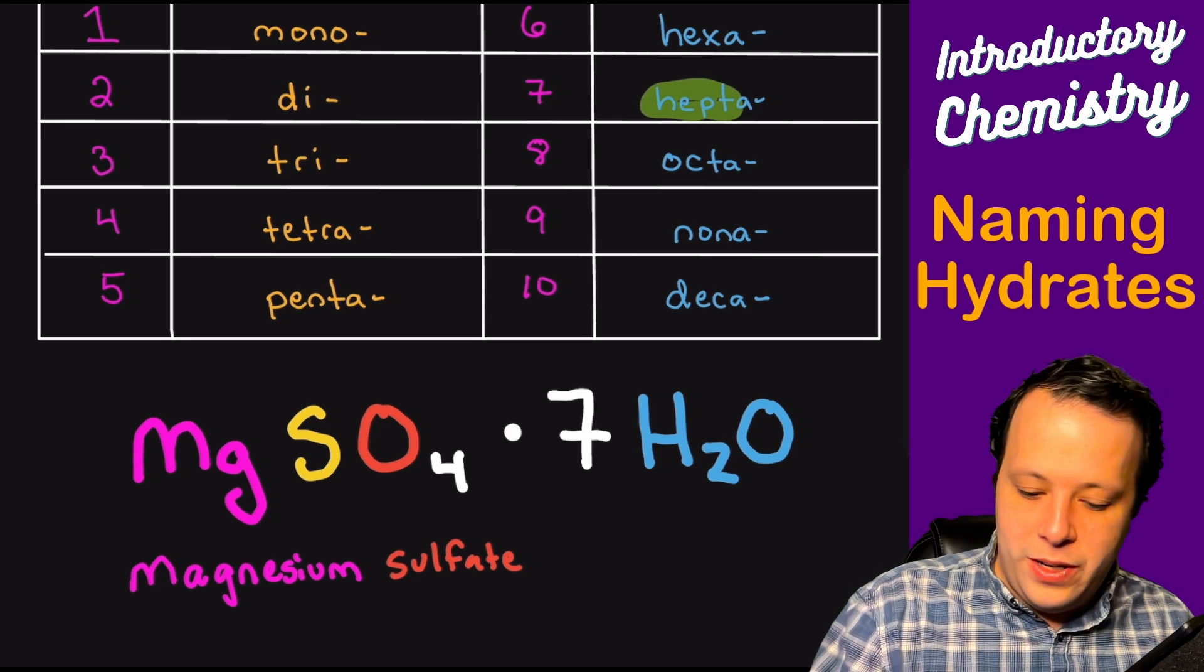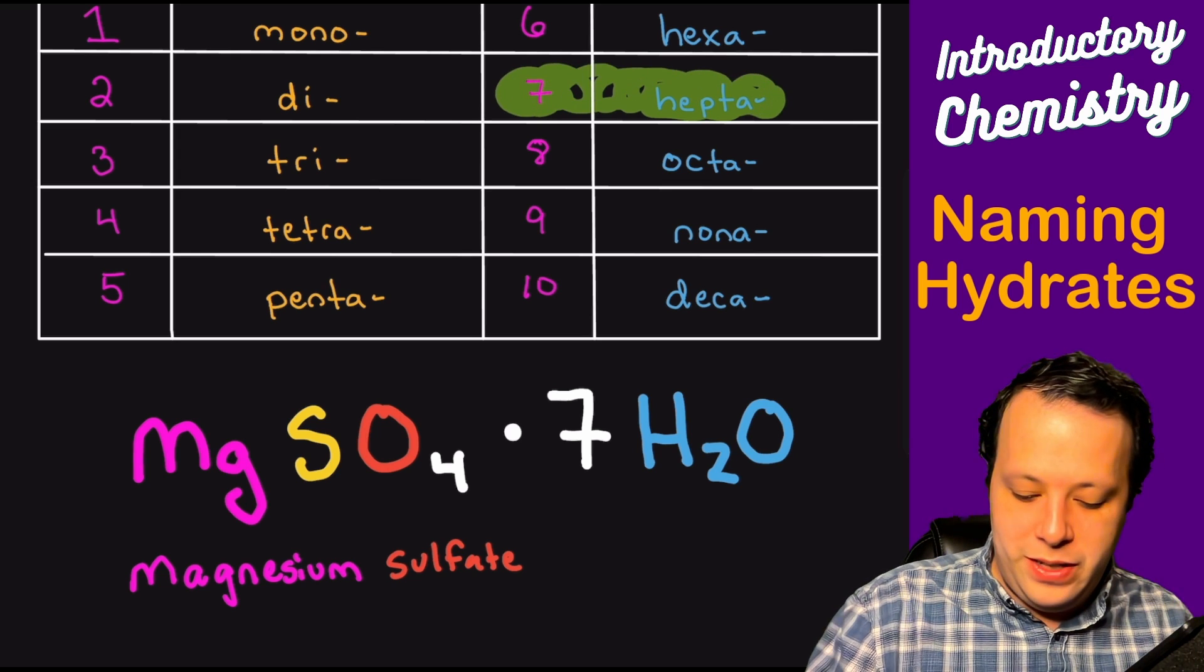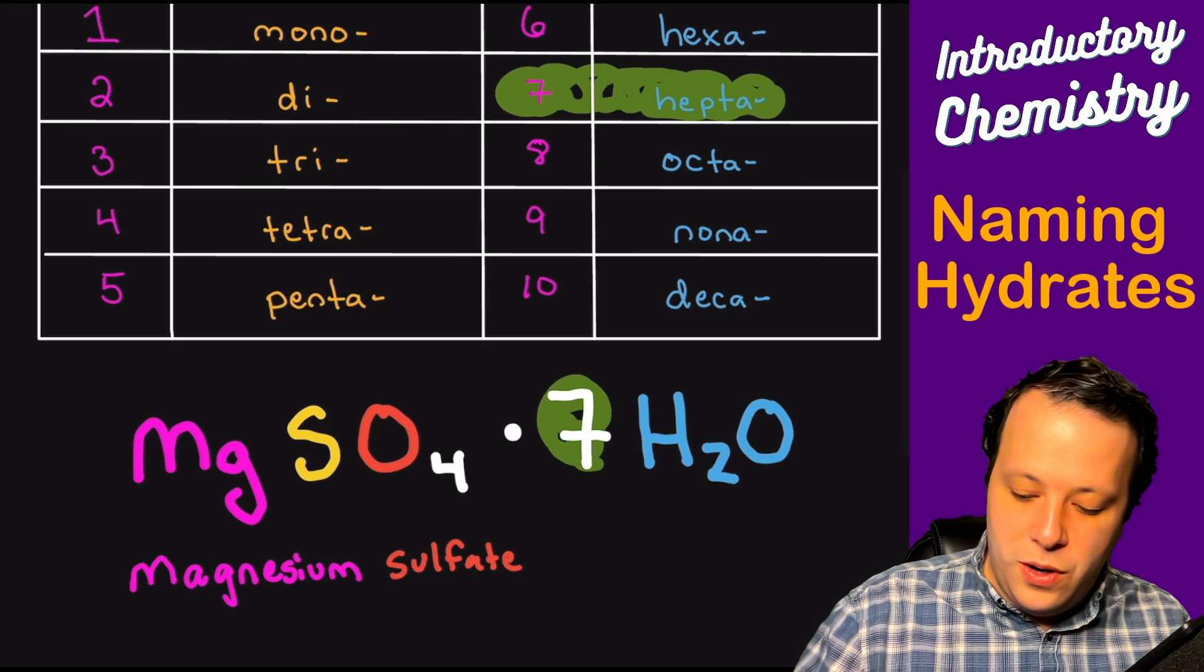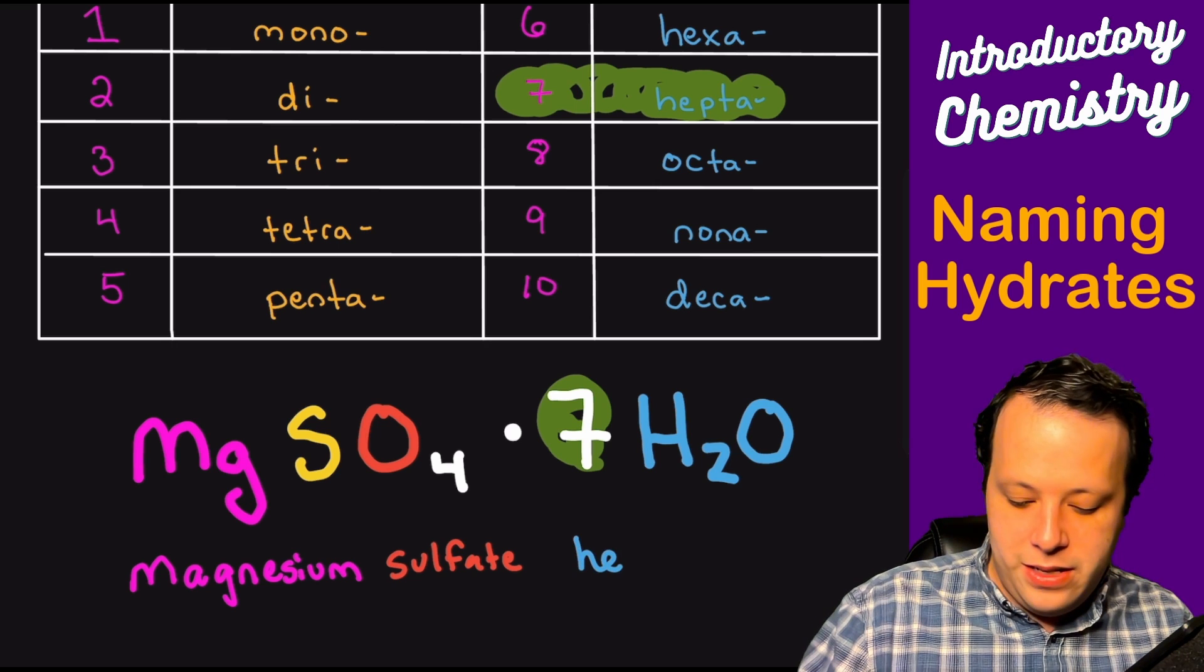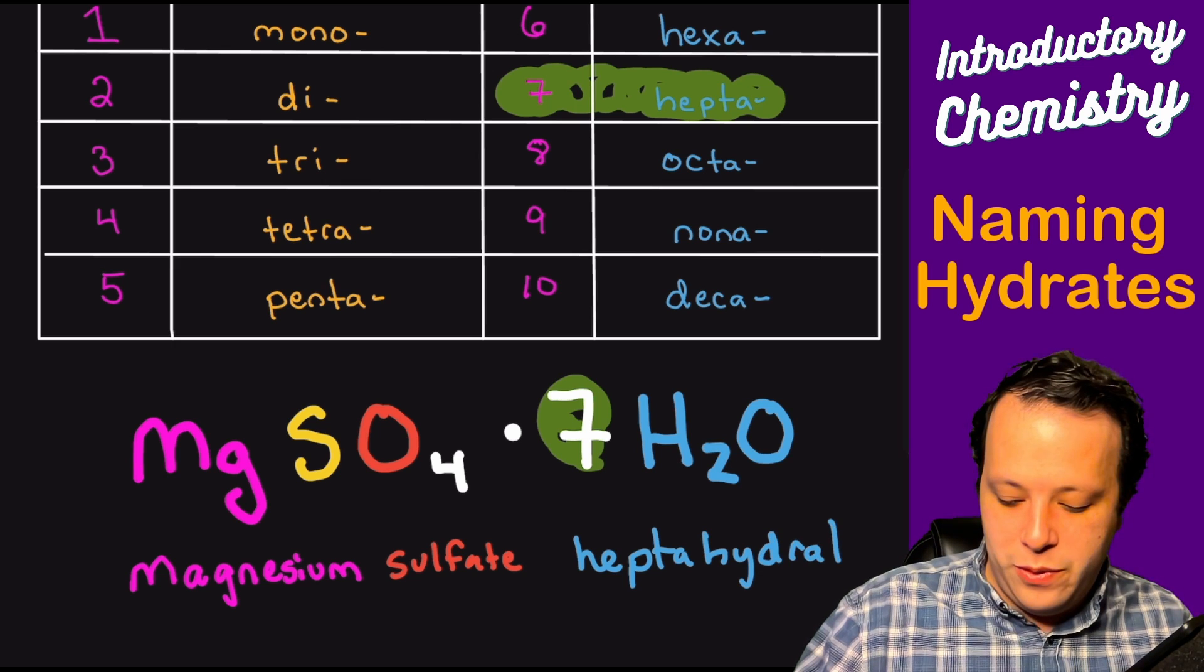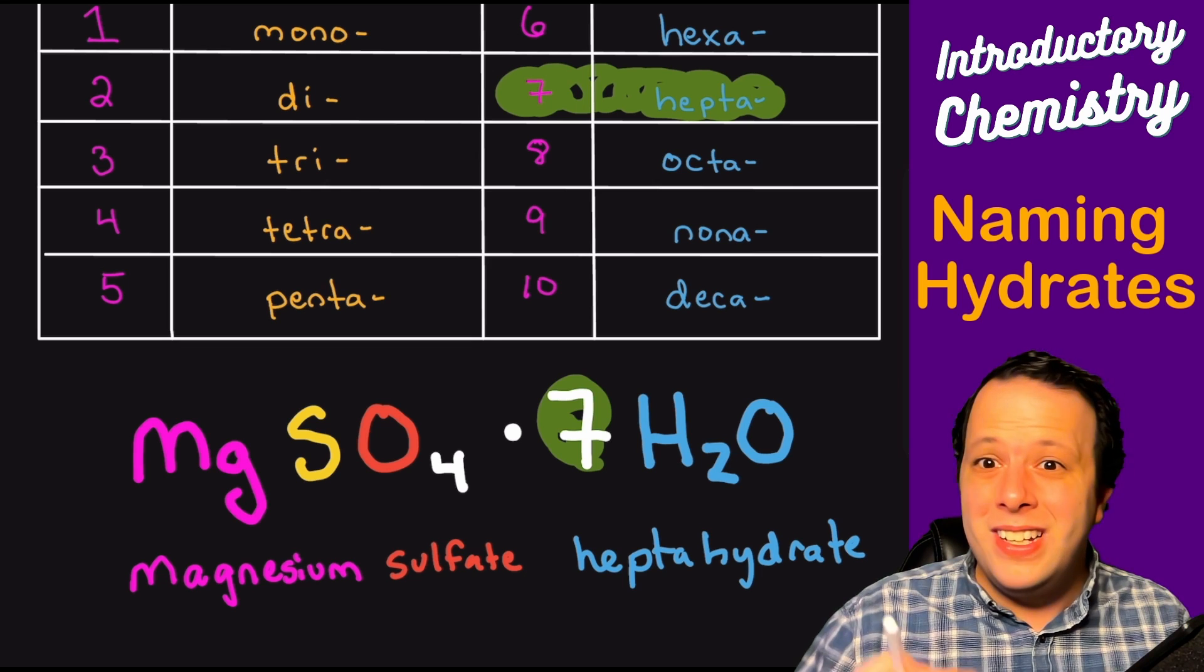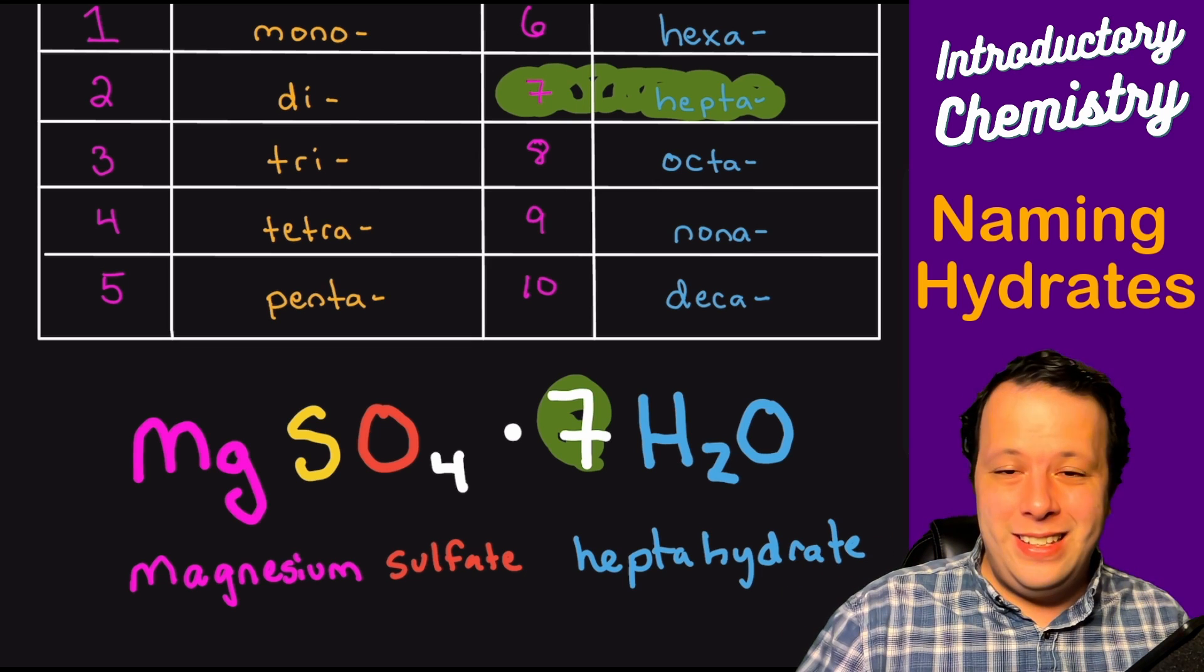So being that we have seven waters that are here, so we're going to be using the hepta prefix. So we got seven from right here. So all we're going to say is heptahydrate for the name. And that's just one word for the hydrate. There's a little space between them. Let's do a bunch of examples and see if we can fully understand this.